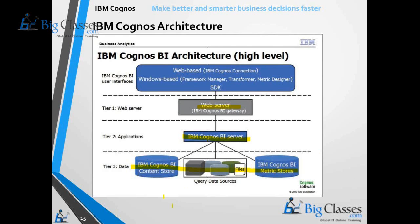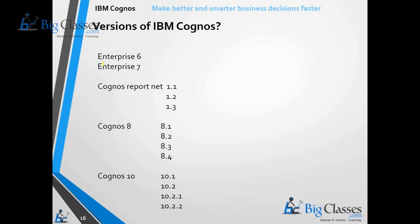Now let us see the different versions. The earliest version is EP6 — Enterprise 6. I am not too sure whether there are any prior versions, but I know from Enterprise 6 and Enterprise 7. I started working on Cognos from Enterprise 7 onwards, almost 10-12 years back. And then there is Cognos Report Net, with versions 1.1, 1.2, and 1.3.